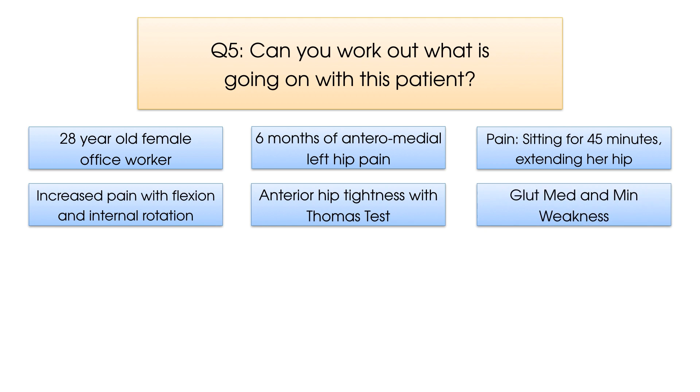On examination, she presented with increased pain with flexion and internal rotation, as well as increased tightness in the anterior hip when a Thomas test was completed. She also presented with weakness in the gluteus medius and minimus muscles. Any thoughts on what's going on?